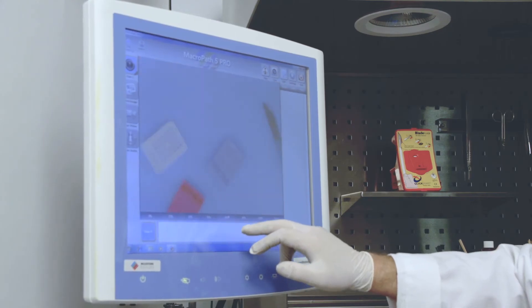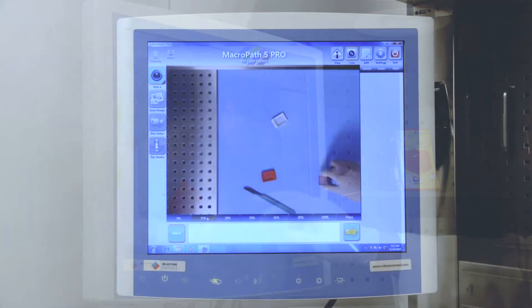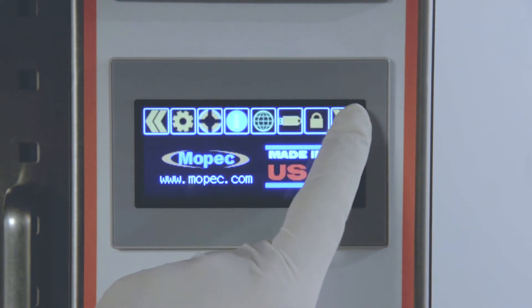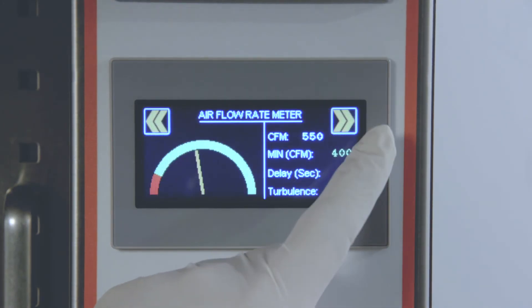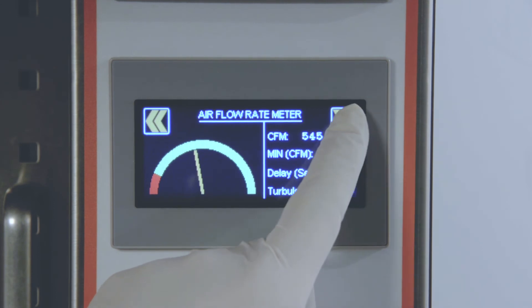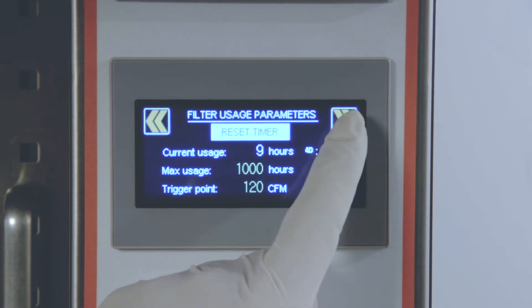The workstation can be ordered with the Milestone Macropath X factory installed, or an imaging system can be added at a later time. Airflow, formalin management, and filter usage are monitored with an interactive touchscreen display and customizable alarms based on facility safety needs.